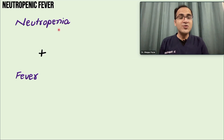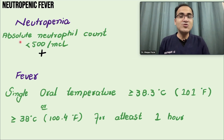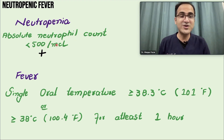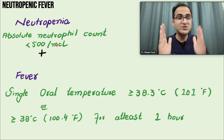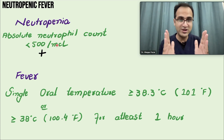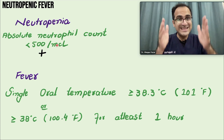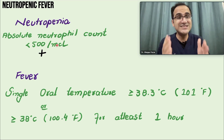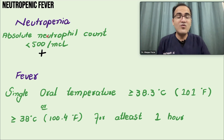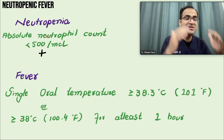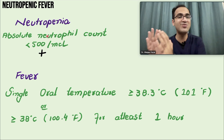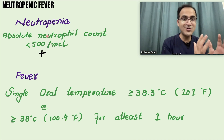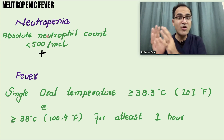First of all, what is neutropenic fever? Whenever there is fever in the presence of neutropenia. Neutropenia is defined as an absolute neutrophil count less than 500 neutrophils per microliter. Normal neutrophil count is from 2500 to 7000 neutrophils per microliter. When the neutrophils are down, immunity is weak because neutrophils are white blood cells that protect the body from infections.